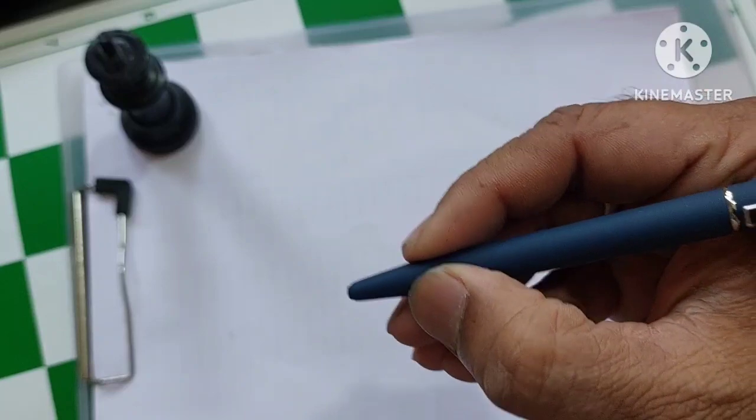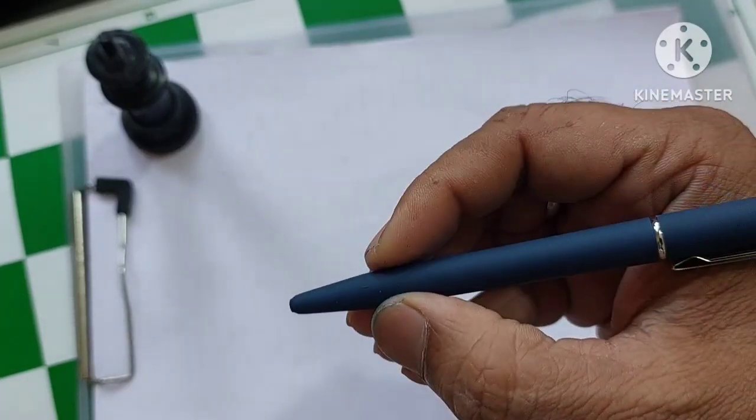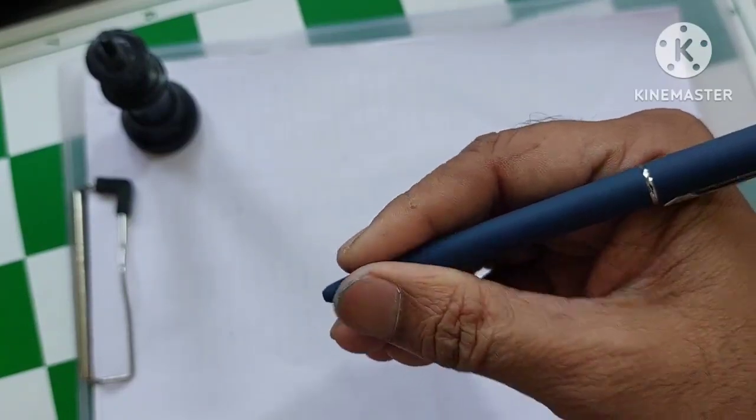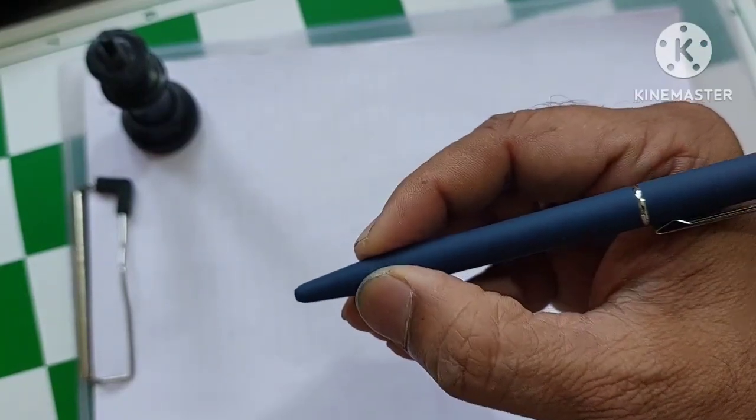The matte type finish also gives a good grip to the pen. It is anti-slippery. The pen won't slip if you are having sweating hands or you are writing for a very long time. It gives a good grip.